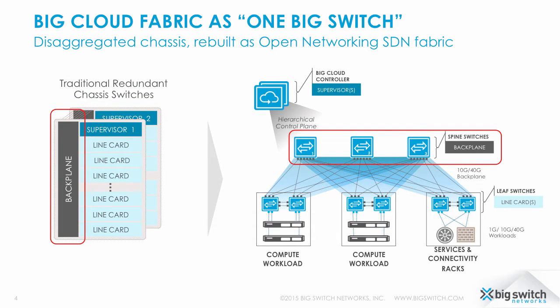The spine switches correspond to the backplane. In a traditional chassis switch, if you want to increase chassis bandwidth, you add a fabric card. In the Big Cloud Fabric, you add a spine switch.